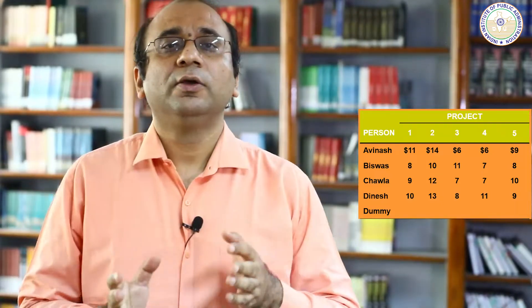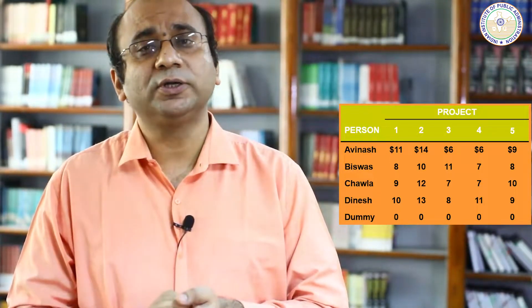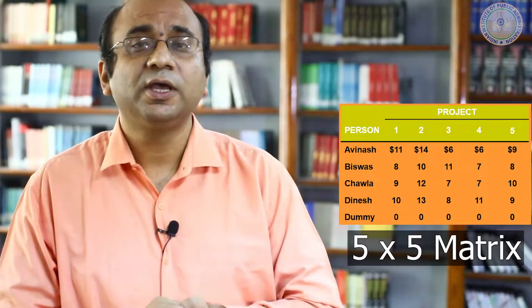To solve this unbalanced problem — for example, five jobs and four persons — we create a dummy person. We are not hiring a new person; we just add a dummy person and assign a cost of zero to them, because that person doesn't exist and won't actually do the job. Adding this dummy person makes our matrix balanced: now we have five jobs and five persons.